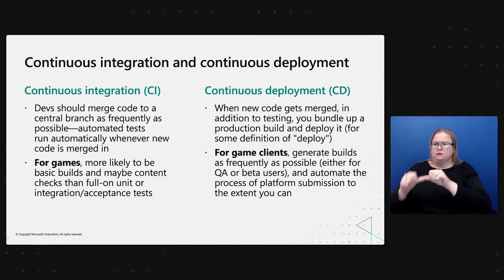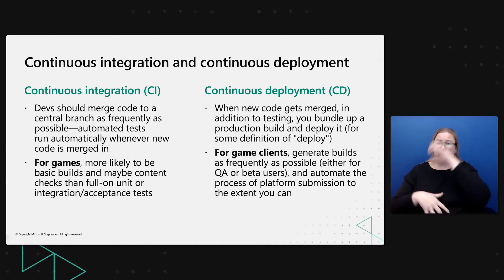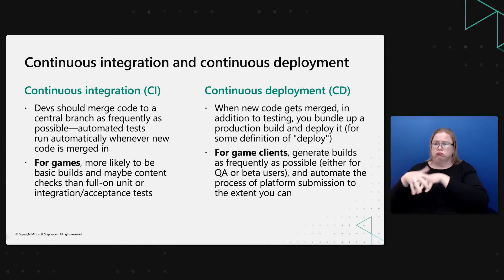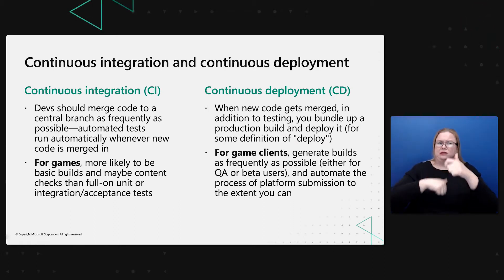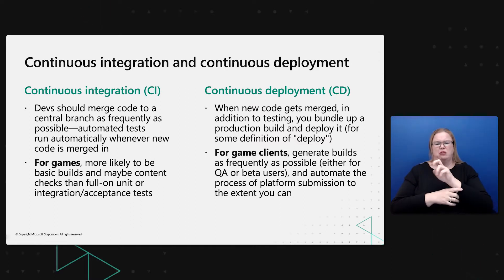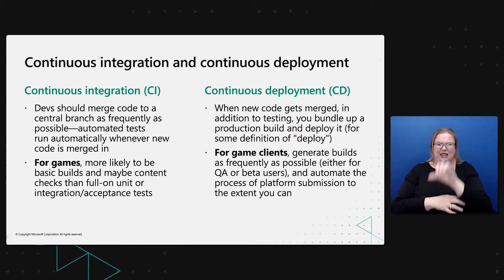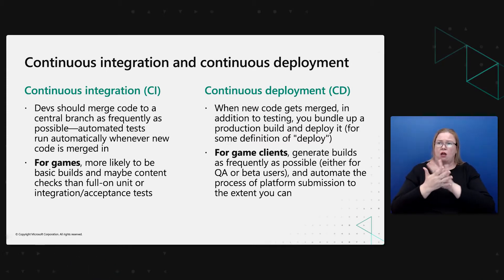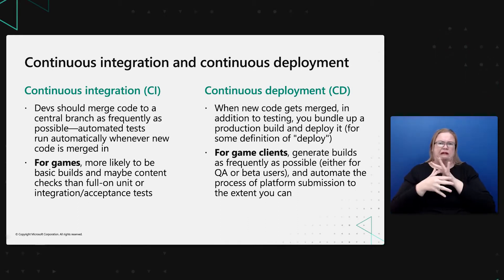The idea of continuous integration is: assuming you have a single code repository with a main branch, you should be merging in code as often as possible — no longer relying on long-lived feature branches. Every time you merge code in, some automated tests should run. In games, this is less likely to be proper unit tests or integration tests, but just building your game to make sure it actually compiles can be really valuable, along with maybe some light content checks around your game scripting or custom tooling.